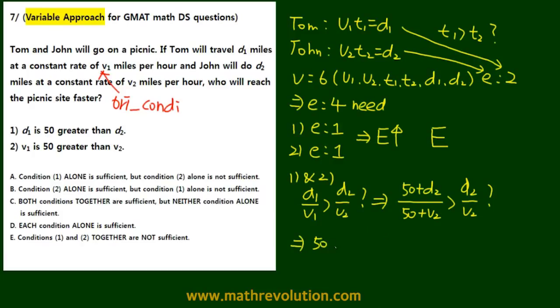We'll cross multiply. What we get is 50 plus d2 times v2 greater than 50 plus v2 times d2. Or in other words, 50v2 plus d2v2, whether that's greater than 50d2 plus v2d2.